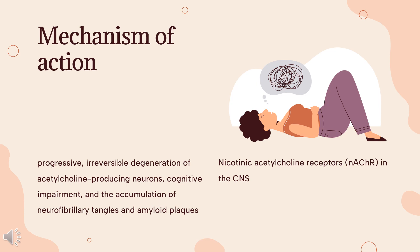Studies show that acetylcholine (ACh) is involved in the modulation of acquisition, encoding, consolidation, reconsolidation, extinction, and retrieval of memory. The gradual loss of cholinergic neurons in Alzheimer's disease (AD) may therefore contribute to the memory loss exhibited by AD patients.